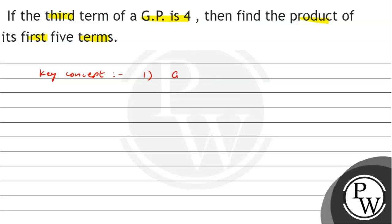The first five terms of a GP are a, ar, a r square, a r cube, and a r raised to the power 4. These are the first five terms of a GP.